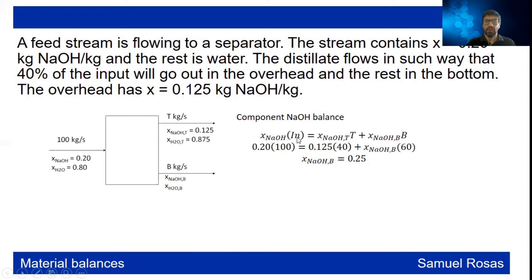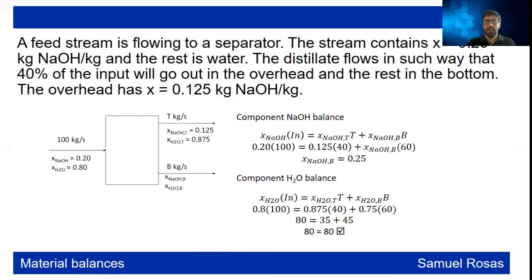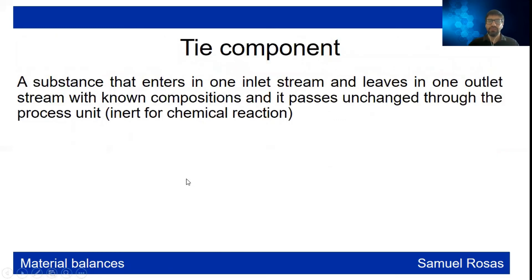The NaOH balance gives: 0.20 × 100 = 20 kg/s entering. At the outlets: 0.125 × 40 + x × 60 = 20, solving for x gives a composition of 0.25 kilograms NaOH per kilogram at the bottom. You can also do the water component balance to check consistency: 80 kg/s of water enters, part exits at the top and part at the bottom.